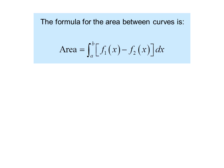The formula for the area between curves is area equals the integral from a to b of f1(x) minus f2(x) dx. Where f1 and f2 are y values, dx is the thickness of the strip.